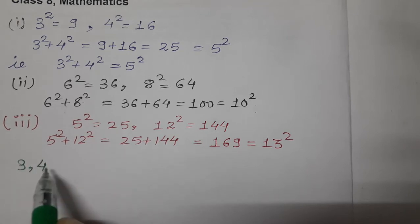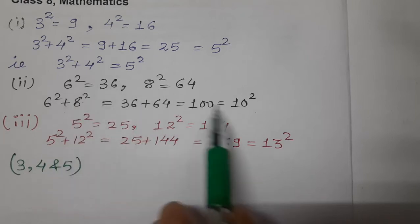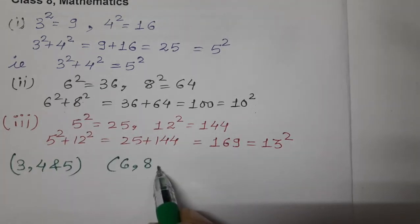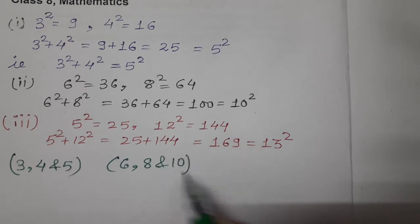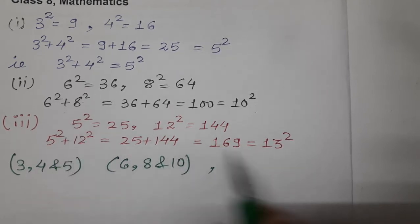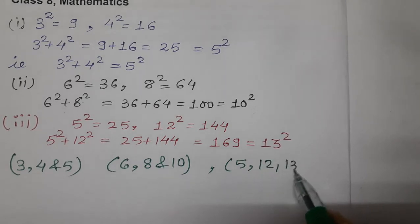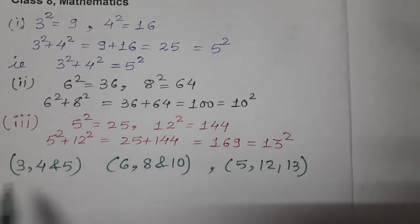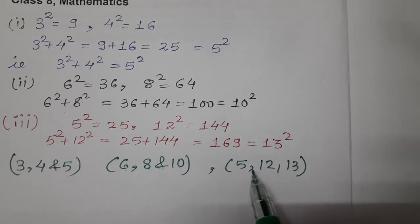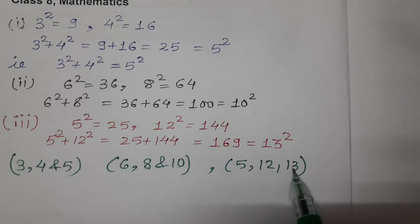That means in the first one, 3, 4, 5. Second one, 6, 8 and 10. And the third one, 5, 12 and 13. And there are so many such numbers. 3 square plus 4 square equals to 5 square. 6 square plus 8 square equals to 10 square. 5 square plus 12 square equals to 13 square.